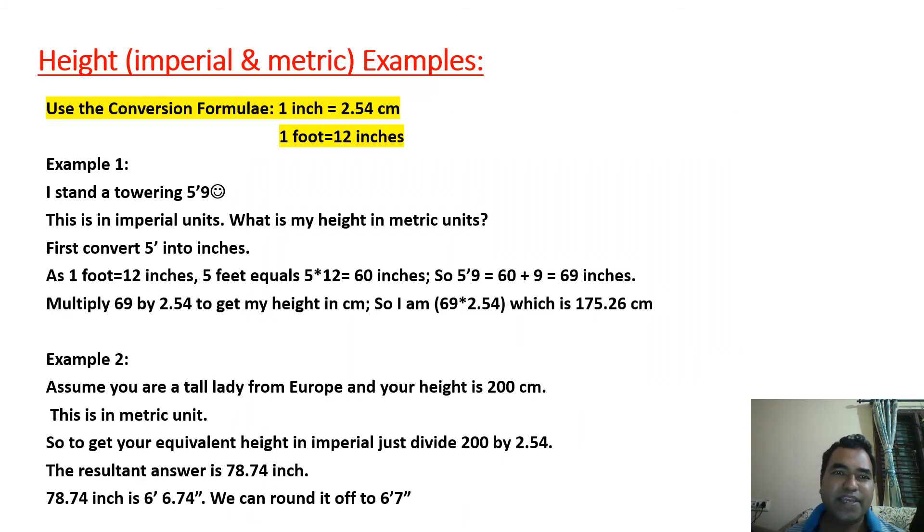Let me take an example so that you can understand the conversions better. These are the main two formulas that you are supposed to use while converting height: 1 inch equals 2.54 centimeters and 1 foot equals 12 inches.